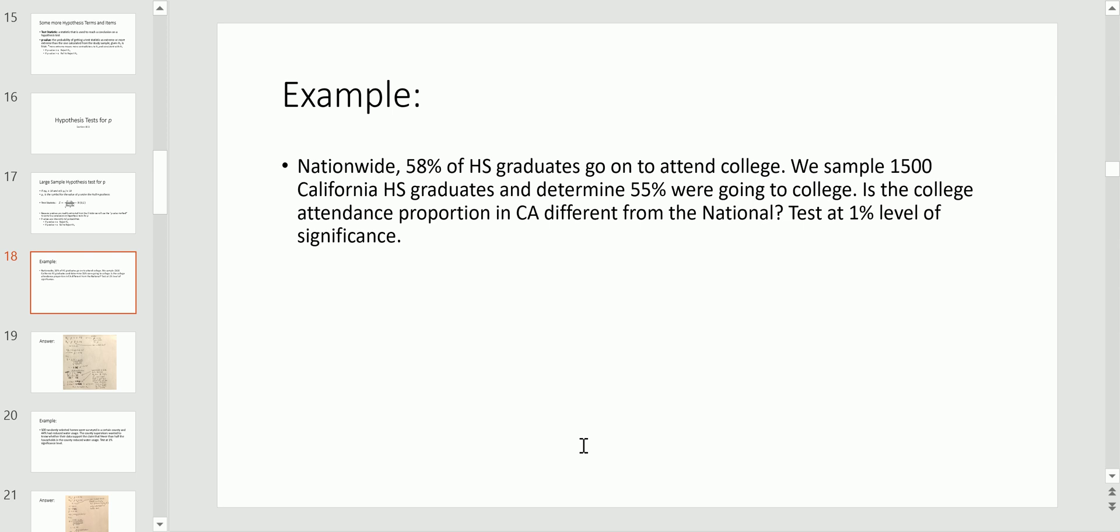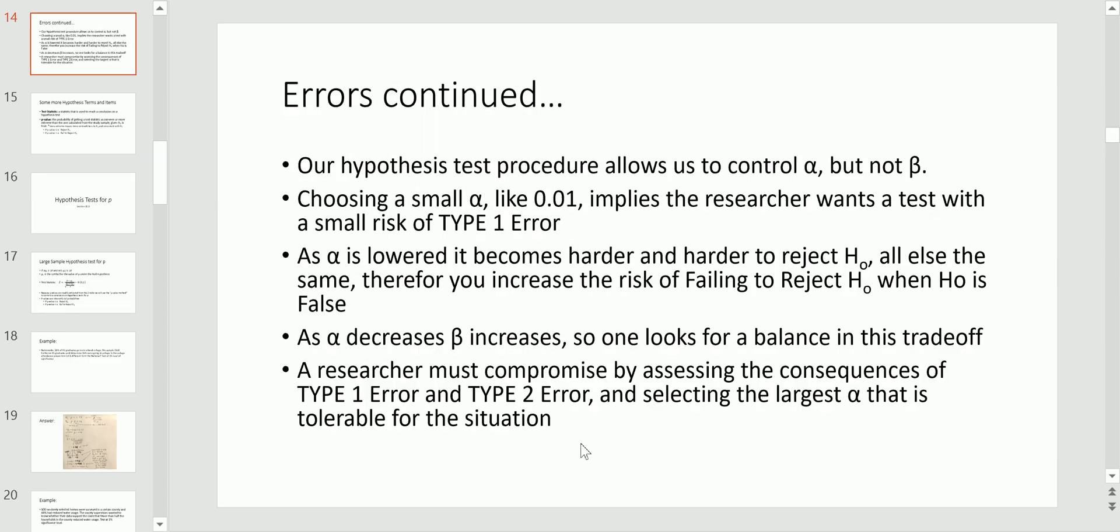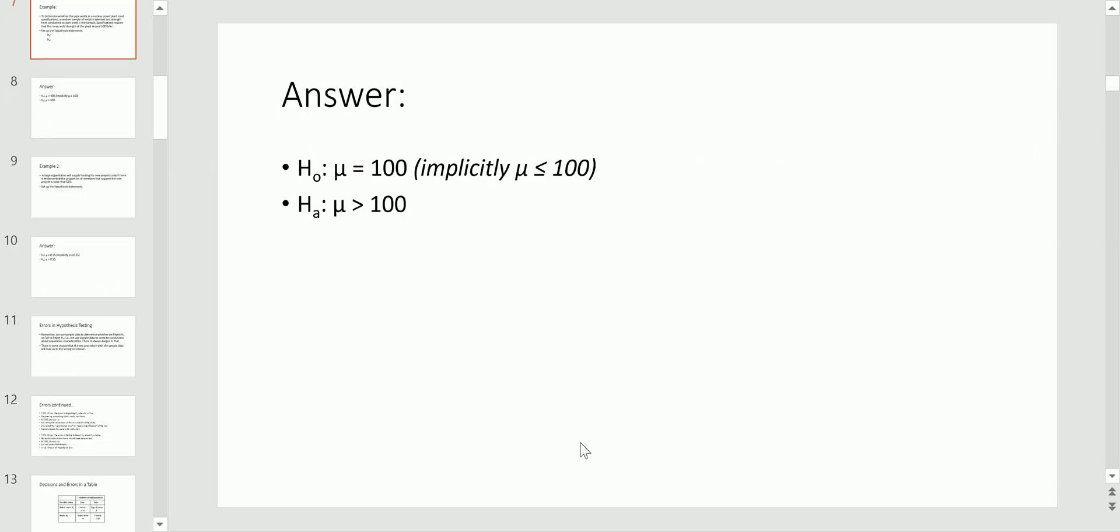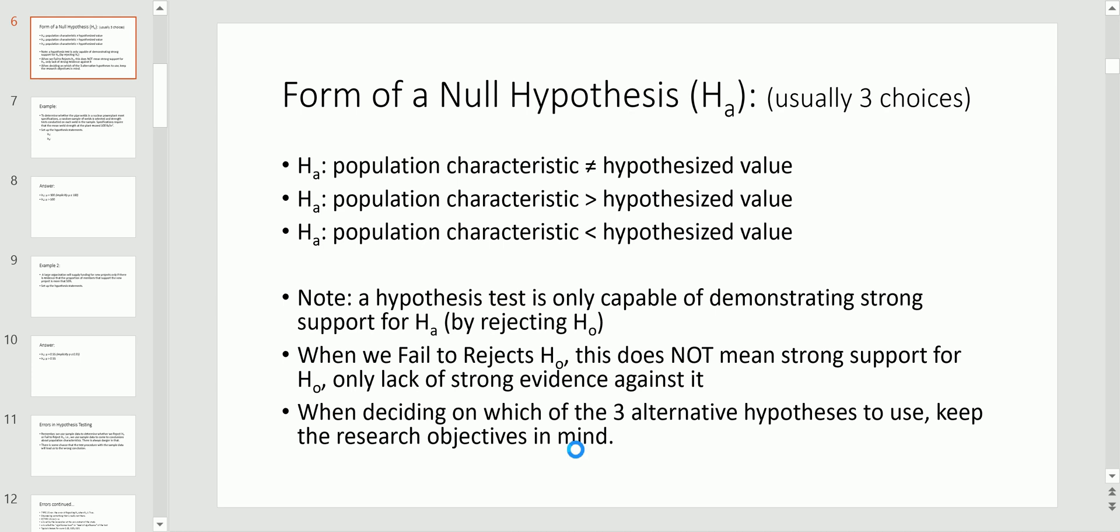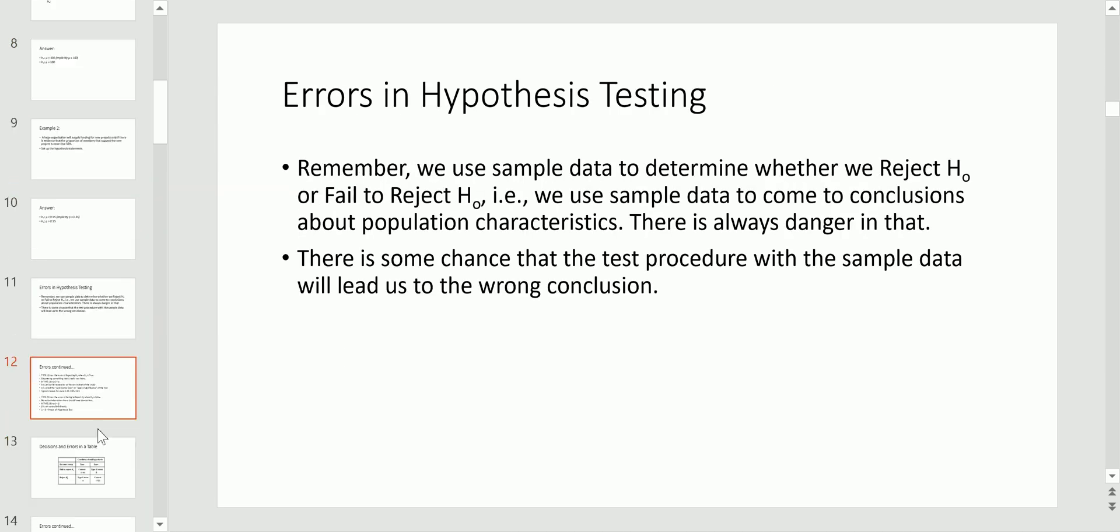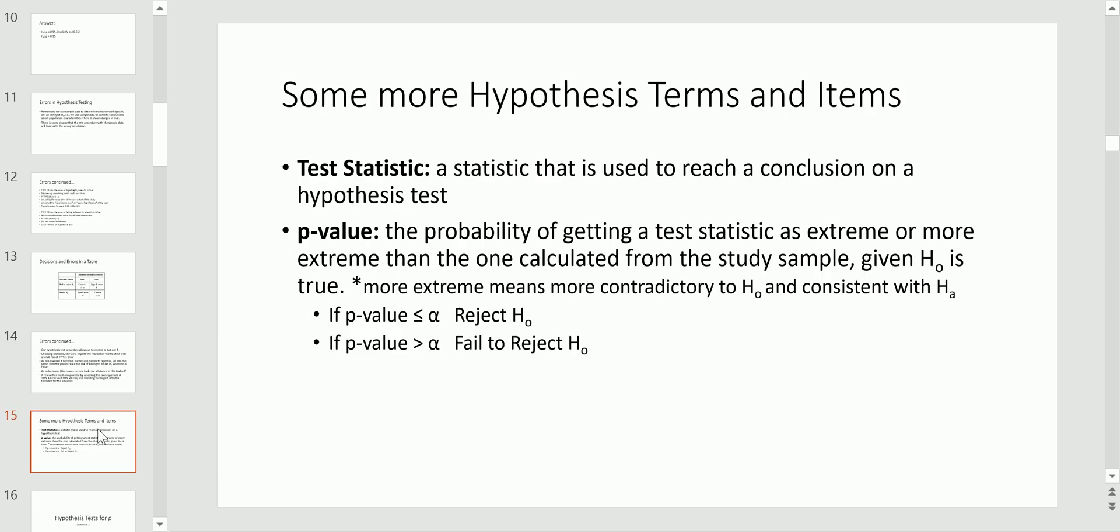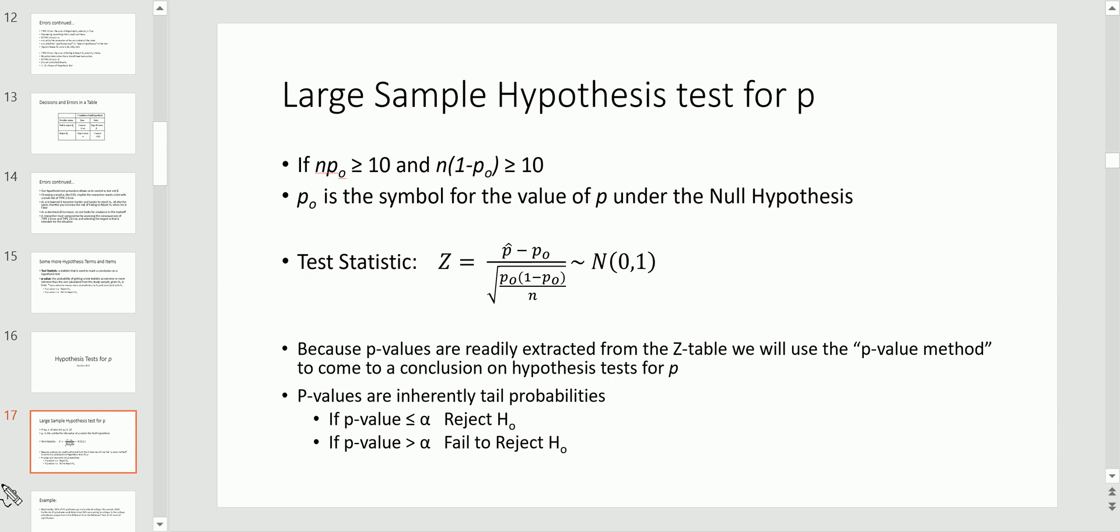Now, before we do an example, one other thing I want to remind you of were the three alternative forms for these initial set of hypothesis tests that we're going to do. And those were, also on the previous lecture, either not equal to, greater than, or less than. You need to be very careful, as I said back then, on which of these you're going to choose for the alternative hypothesis. Because that's going to make a difference between a one-sided or one-tailed test and a two-sided or two-tailed test. And that's going to affect your computation of the p-value. So again, go back and watch that intro to a hypothesis test lecture if you missed that, because I talk about that stuff at length.